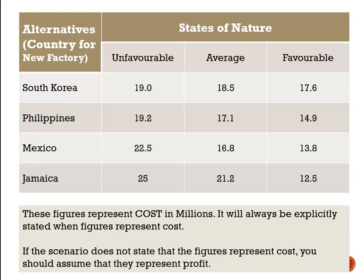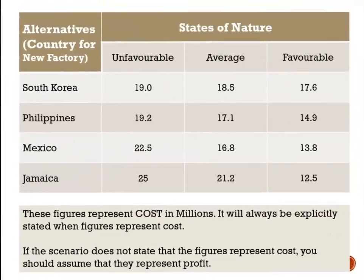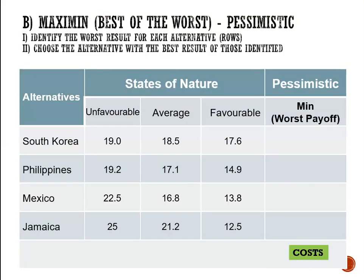Here we're looking at a payoff table where the figures represent cost in millions of dollars. We're choosing the best location for our new factory — South Korea, Philippines, Mexico, and Jamaica. Step one: identify the worst result for each alternative. South Korea has costs of 19 million, 18.5 million, or 17.6 million. The worst of those is the highest cost, which is 19 million.